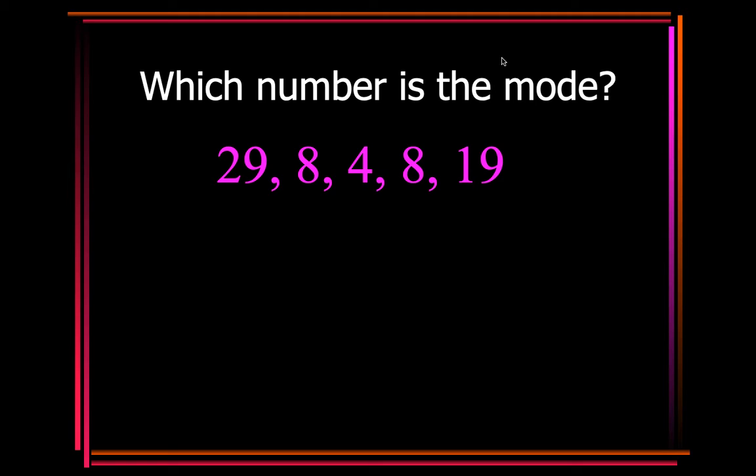What number is the mode here? So you list them in order from least to greatest. So you have 4, 8, 8, 19, and 29. And obviously 8 appears the most, so therefore 8 is your mode.